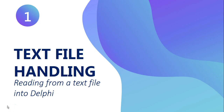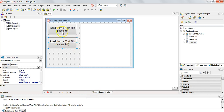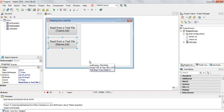This is a continuation of the last video where we said we were going to learn about reading data from a text file into Delphi. We're going to do another example, slightly more complicated, on how to read information from a text file into Delphi. In the first video we looked at a text file called Teams and put the values straight into a rich edit control. We're going to do a slightly different example.